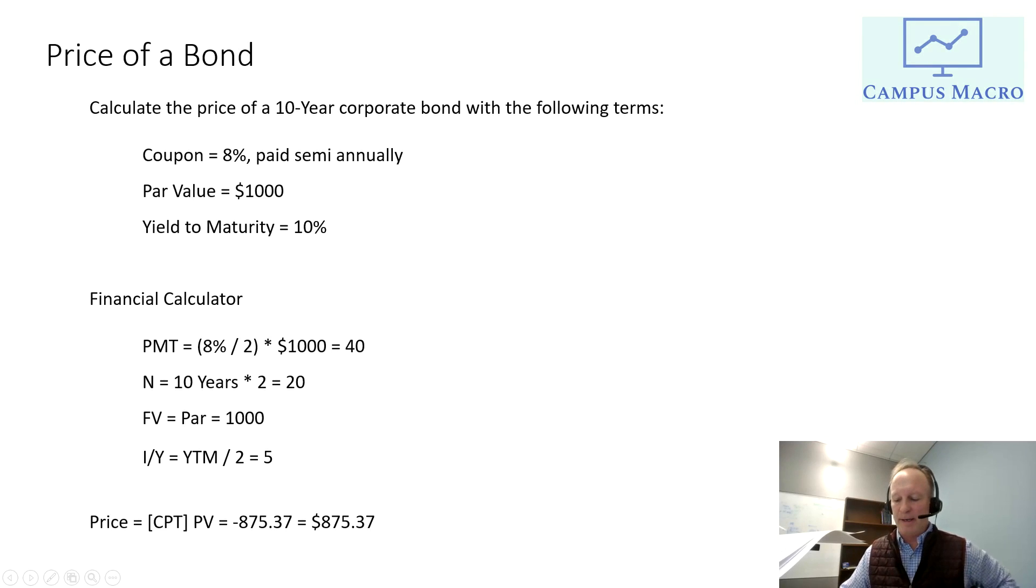Well, the reason is because it's $875 out the door. I'm paying $875, and then I'm going to get back $40 every six months, and I'm going to get back $1,000 in 10 years. So the stuff I get back is a positive sign, the stuff I pay out is a negative sign. But what that really means is the price of the bond is $875.37, or call it 38 cents if I'm rounding correctly.